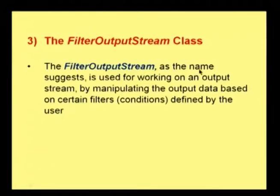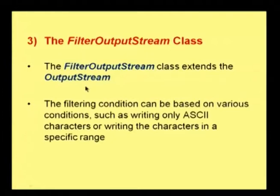You also have a Filter Output Stream. As the name suggests, it is used for working on an output stream by manipulating the output data based on certain filters. We can filter based on particular conditions as defined by the user. The FilterOutputStream class also extends the output stream. The filtering conditions can be based on various conditions, such as writing only ASCII characters or writing characters in a specific range in that stream.